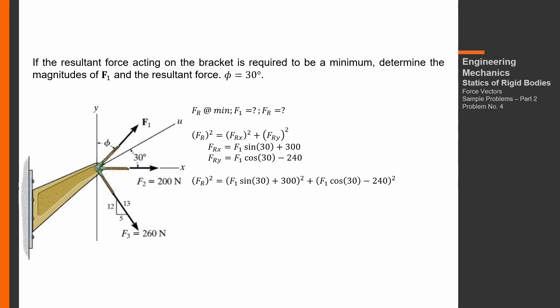Substituting into the equation: FR² equals [F1 sine 30 + 300]² plus [F1 cosine 30 − 240]². To find the minimum value, recall from calculus that we differentiate the equation and set the derivative equal to zero.